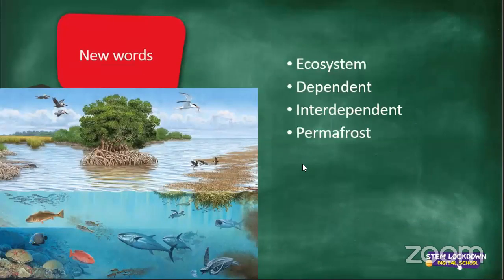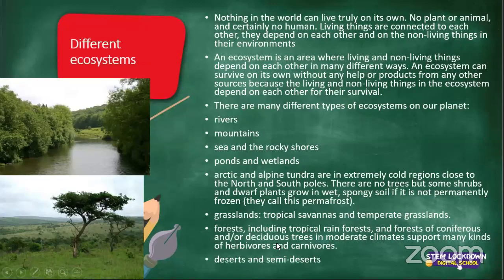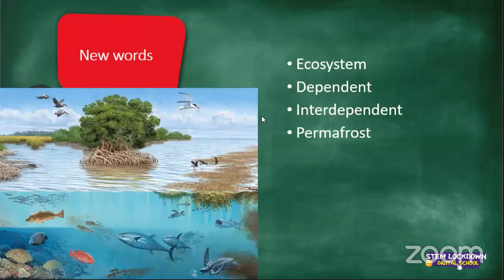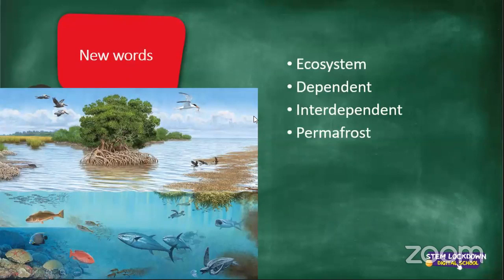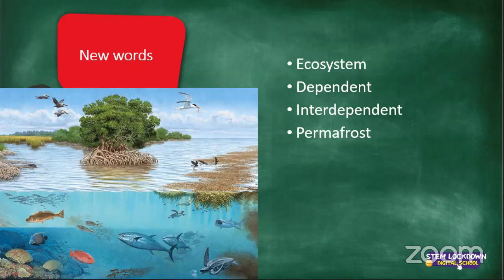Of course, other ecosystems include deserts and semi-deserts. Here are your new words which we will discuss in tomorrow's lesson: ecosystem, dependent, interdependent, and permafrost. Please write down the meanings of those words for homework, and we will discuss the answers in tomorrow's lesson.